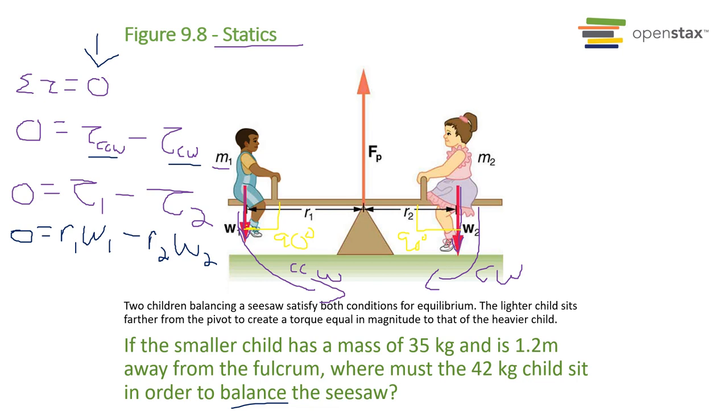We are interested in the smaller child. Okay, looking at mass two is this one. All right, we want to know where kid two sits, so we're going to solve algebraically for distance of child two.